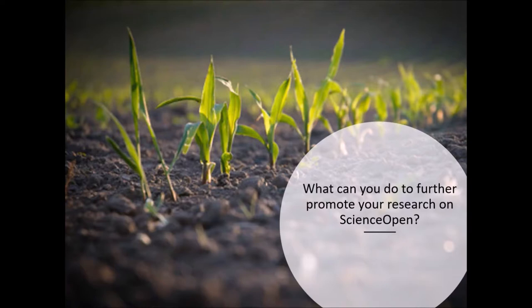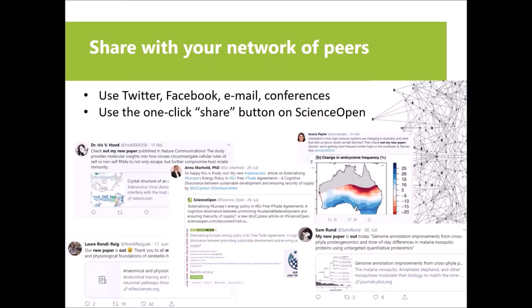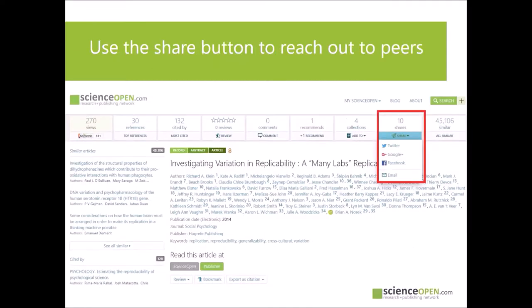What can you do to further promote your research on Science Open and beyond? The first most basic thing you can and actually really must do as an author is to share your newly published article with your network of peers. Most researchers now use Twitter and Facebook or scholarly networks to get out the news about a new publication. It can be as simple as just putting the title and link to your article on Twitter — for example, 'Our new paper is out now.' This can put your work in a wider context and get the attention of science bloggers, journalists, or other multipliers. Science Open makes that easy with the one-click share button to share your article via Twitter, Facebook, or email. This feature requires no registration, takes just a moment, and can have a real impact.